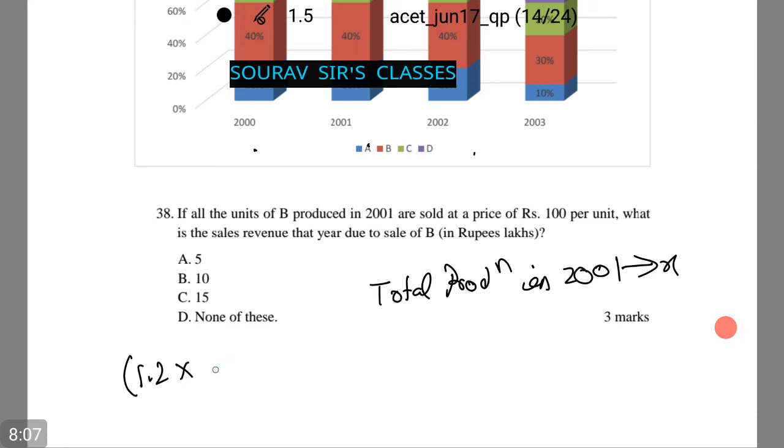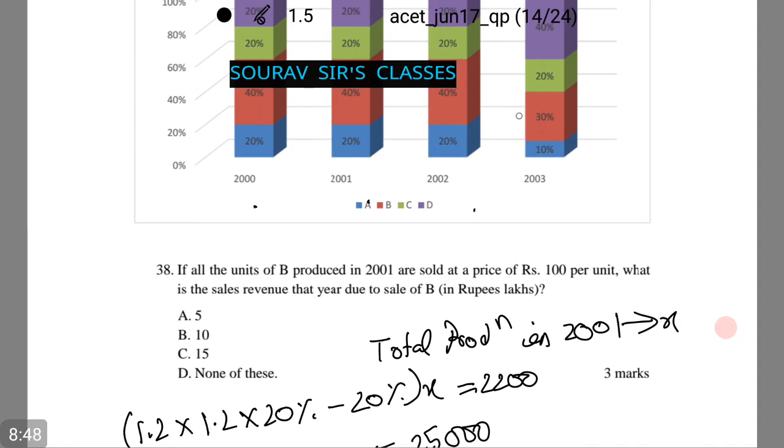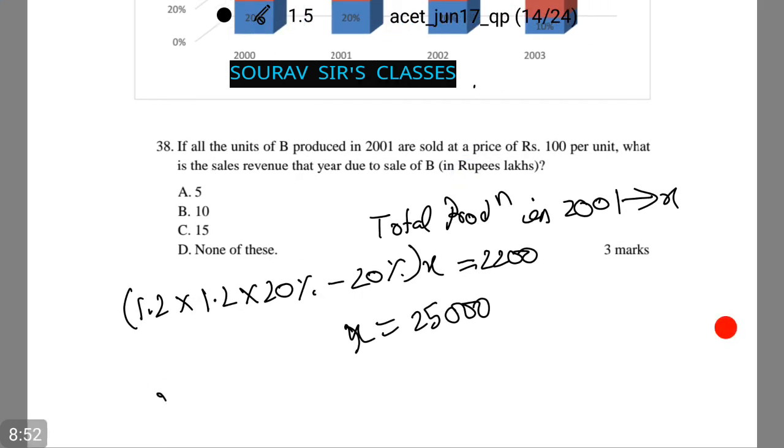Thus the answer will be 1.2 into 1.2 into 20% minus 20% of x equals to 2200 as given in the question. The 1.2 is obtained as it is said in the question that production increases 20% than last year. Hence we try to calculate the actual production between 2001. Hence x equals to 25,000 units. Thus it is also seen from the figure that it is 40%. Therefore x into 40% into 100 comes to 10 lakhs, which is option number B.